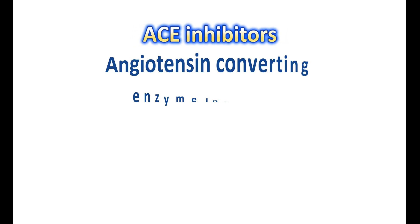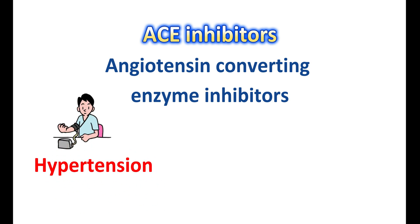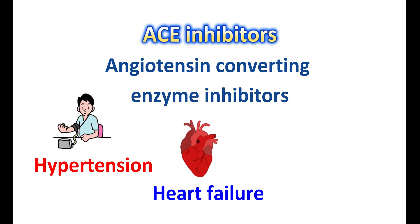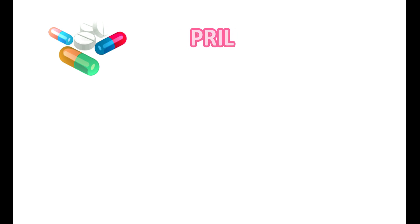ACE inhibitors are well-known drugs commonly known as angiotensin-converting enzyme inhibitors. These drugs are used in the treatment of various conditions like hypertension, cardiovascular disorders like heart failure, and kidney disorders like chronic kidney disease. These medications can be identified by their suffix PRIL, which indicates that they have a ring called proline.